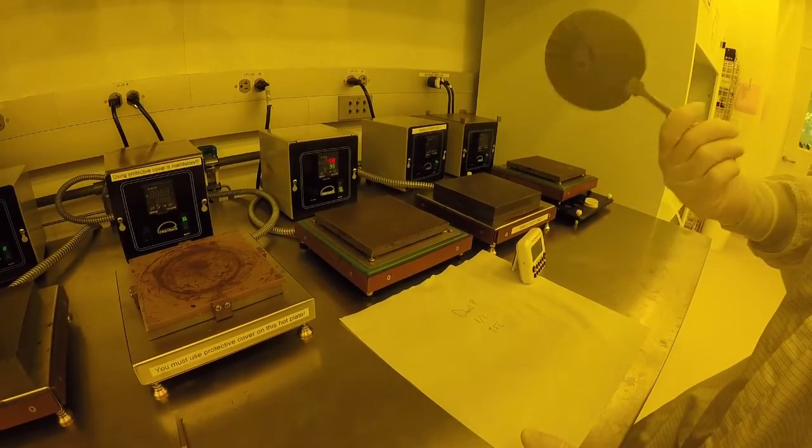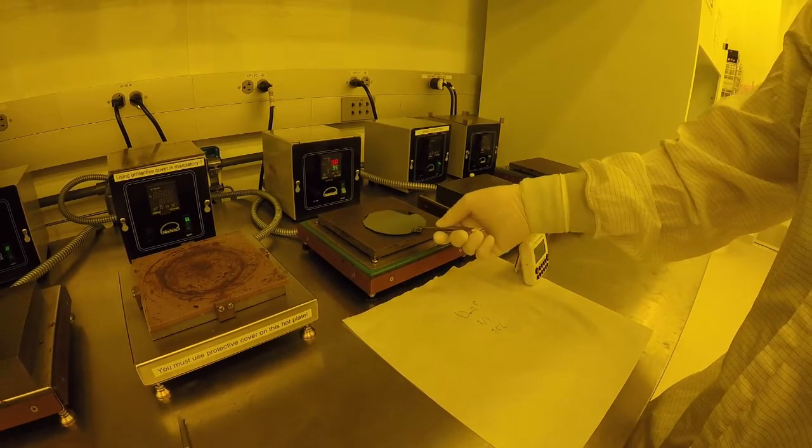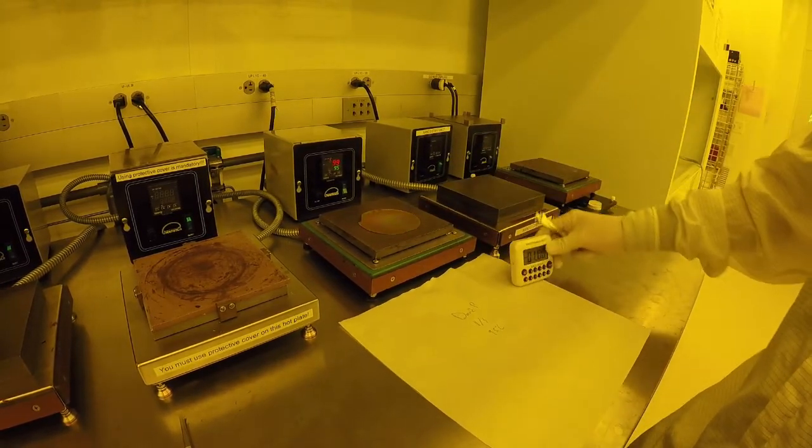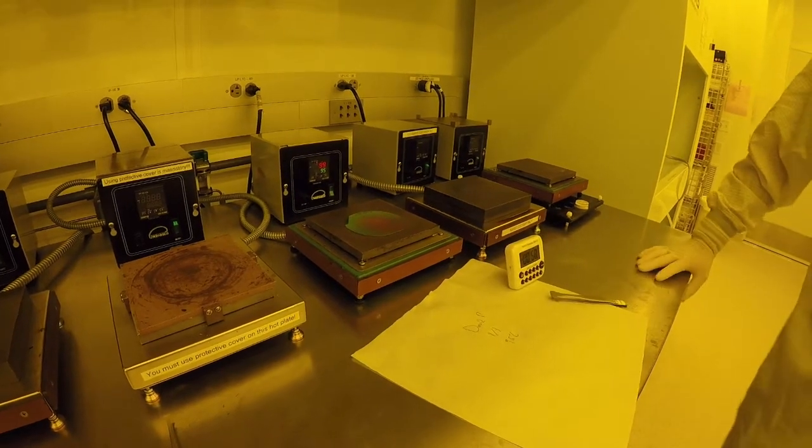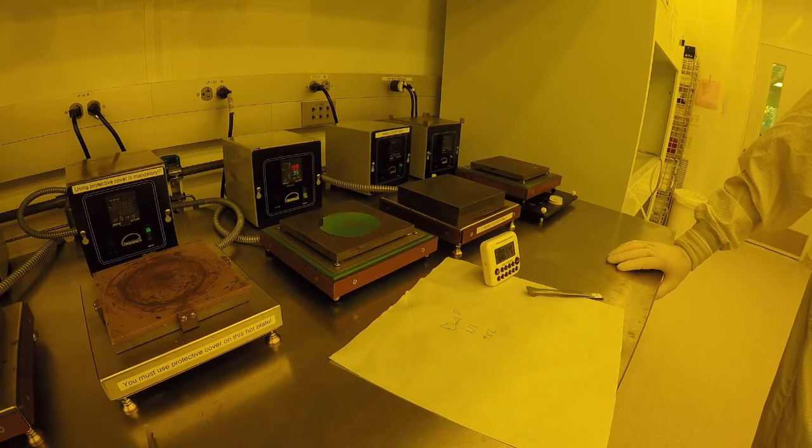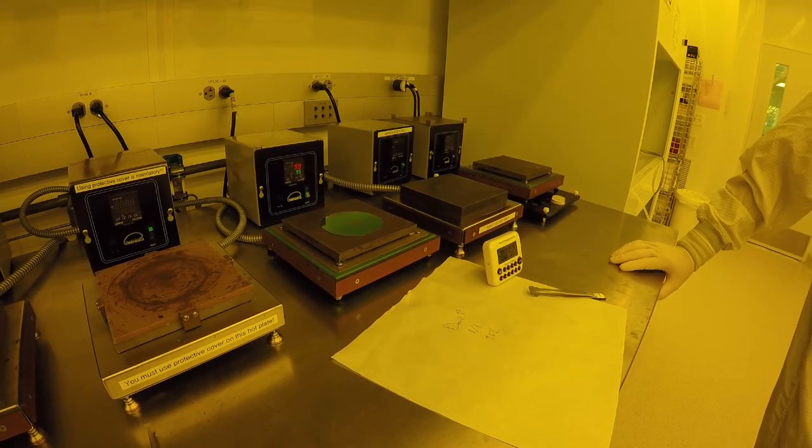For baking, we offer a number of high uniformity hot plates. To reserve a plate, leave a note with your name, date, and process temperature in front of the hot plate. Before putting your sample on the hot plate, ensure the backside is free from photoresist. Never spray solvent directly on or near the hot plates.